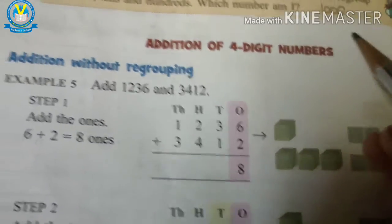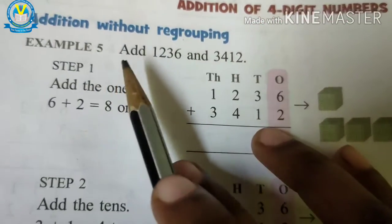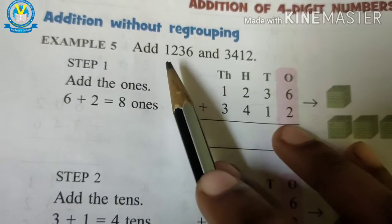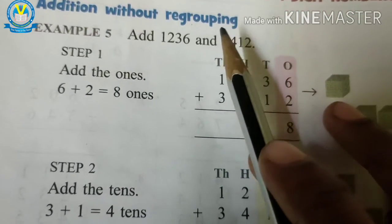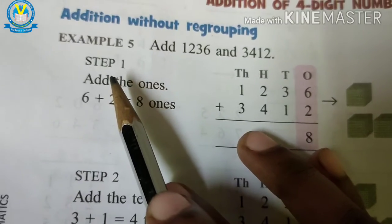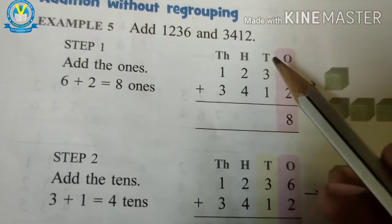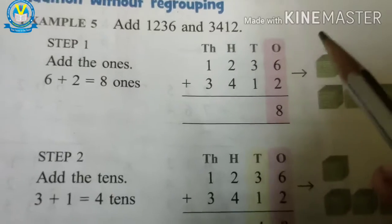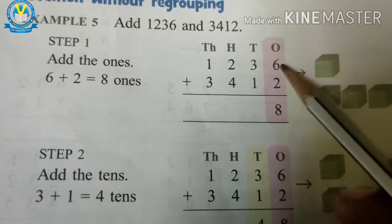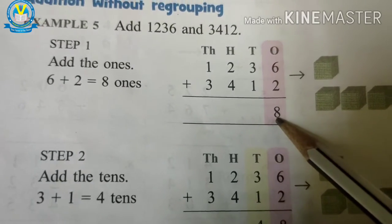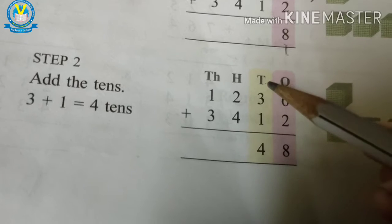Addition of four-digit numbers — addition without regrouping. Here, add 1236 and 3412. First, write the place values: ones, tens, hundreds, thousands. First step: add the ones place values. Six plus two equals eight.